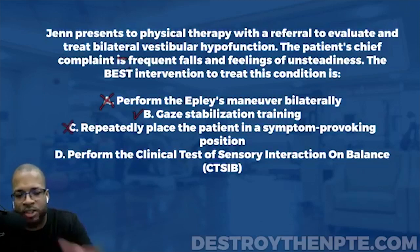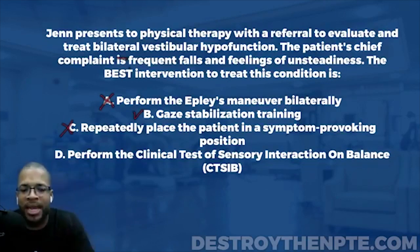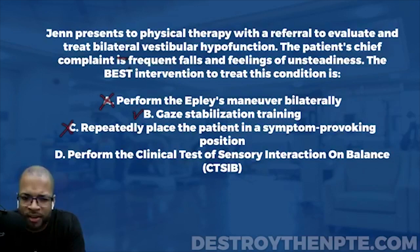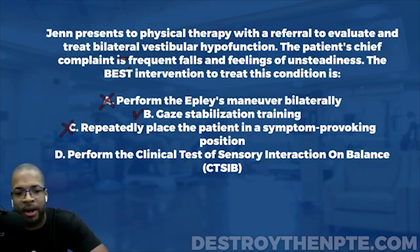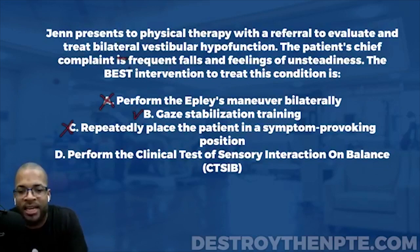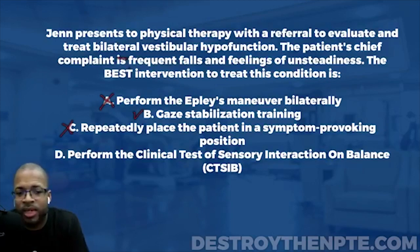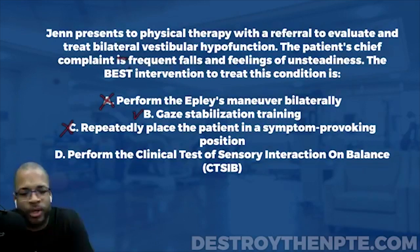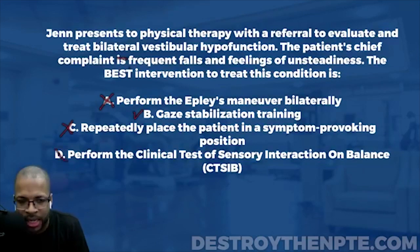Answer D is to perform the CTSIB. This one can be eliminated quickly because the CTSIB is an assessment, not an intervention. It is used to assess which sensory systems — visual, vestibular, or somatosensory — are intact or impaired. It is not designed to treat the patient. The question asks for an intervention, so we can eliminate D with certainty, leaving us with gaze stabilization training as the best answer.